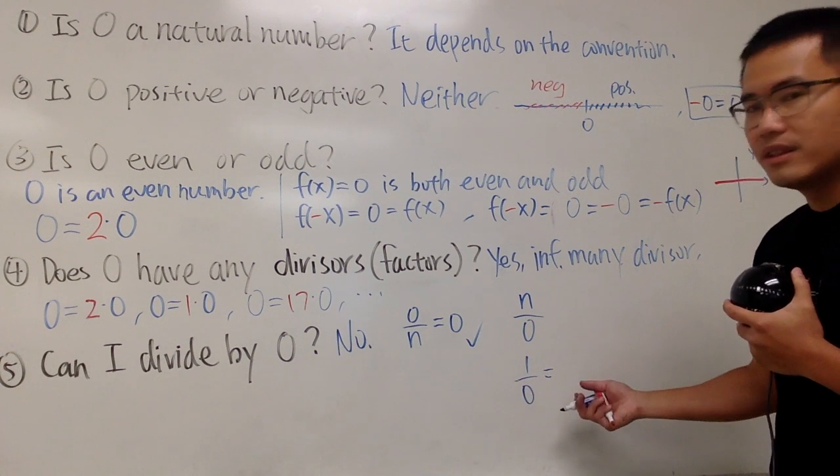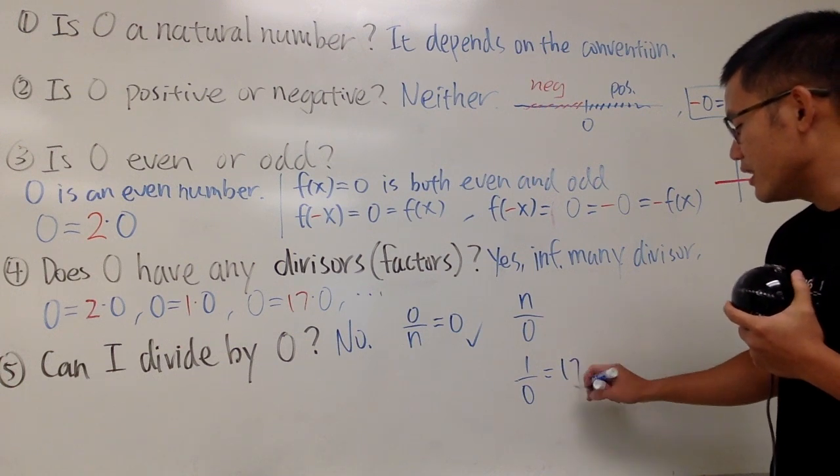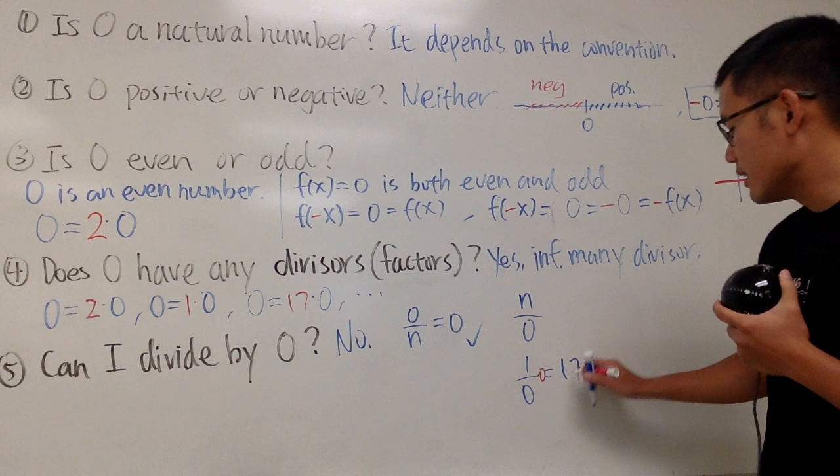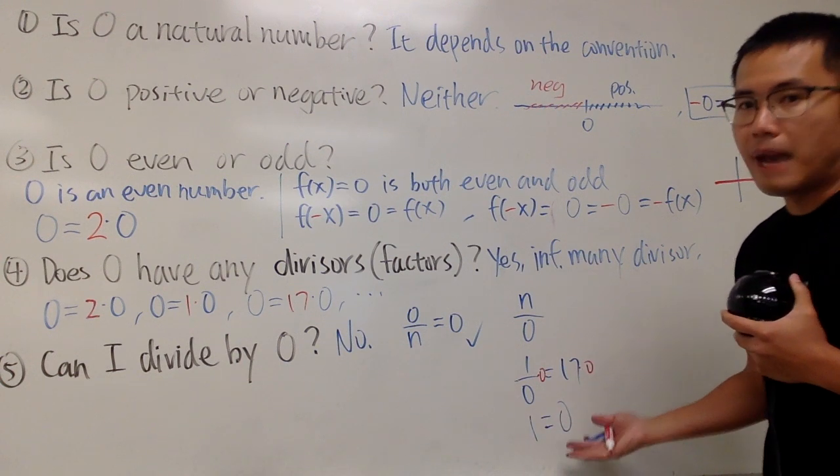Well, what do you think what the answer is? If you said the answer is equal to 17, the moment you multiply both sides by 0, and you will see that you get 1 is equal to 0. And that's really bad.